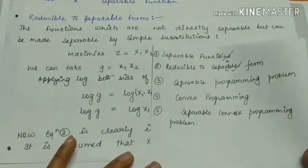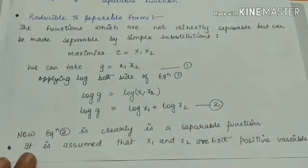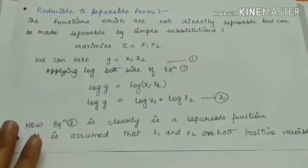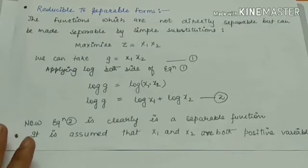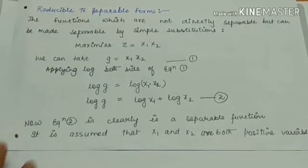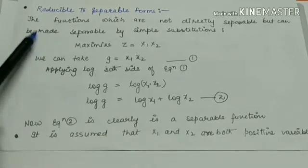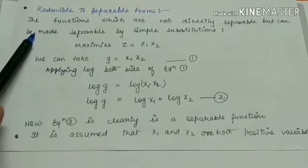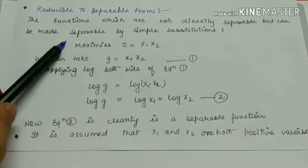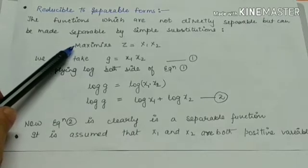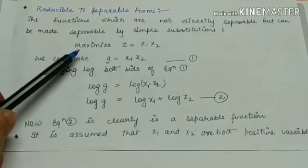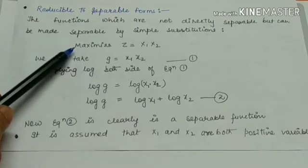Now, reducible to separable form: functions which are not directly separable but can be made separable by a simple substitution. By looking at them you cannot judge they are separable, but applying a simple substitution can make them separable. Such functions are called reducible to separable form.